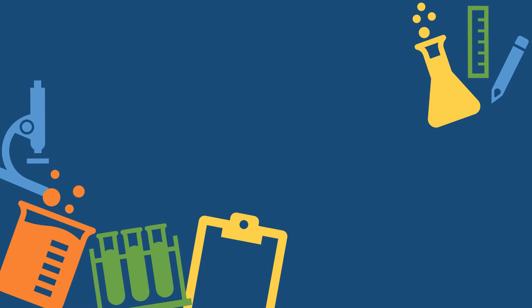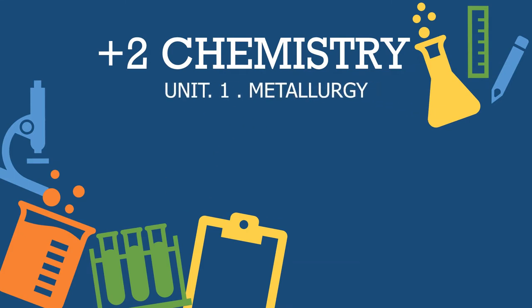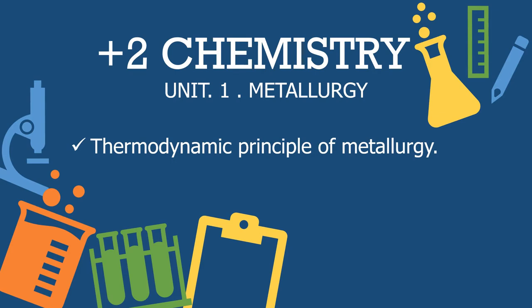Hi students, today we will learn the thermodynamic principle of metallurgy. One of the important steps in metallurgy is the conversion of ore into crude metal. This includes three steps: first, the conversion of ore into metal oxide; next, the conversion of metal oxide into crude metal; and finally, refining the crude metal. The conversion of metal oxide into metal is carried out with the help of a reducing agent. The selection of reducing agent is based on thermodynamic principles of metallurgy, and for this we use the Ellingham diagram.